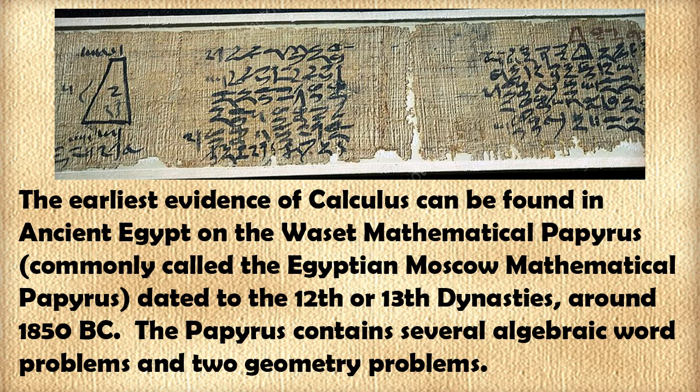This evidence is found on an artifact known as the Egyptian Moscow mathematical papyrus, so called because it was an Egyptian mathematical papyrus acquired by a Russian Egyptologist who displayed it in a museum in Moscow, Russia. However, the papyrus was acquired in the city of Thebes, which the ancient Egyptians referred to as Waset.